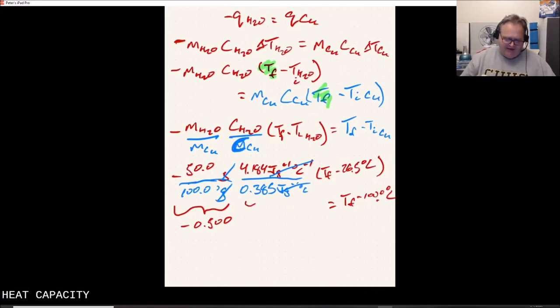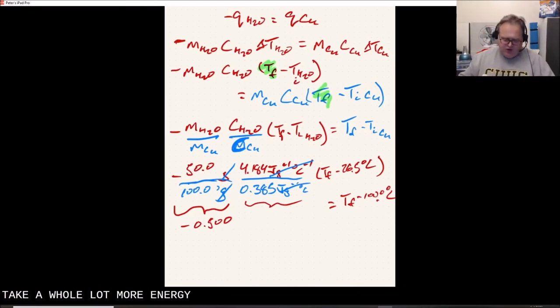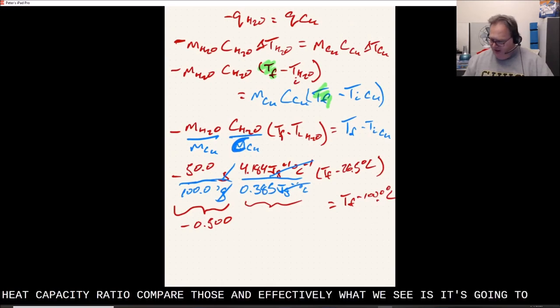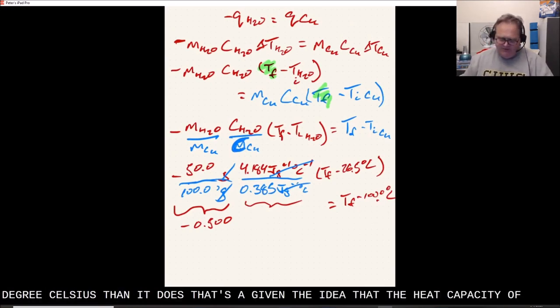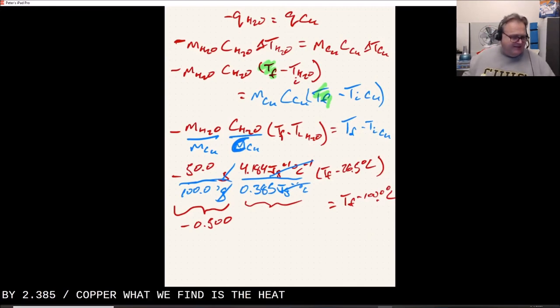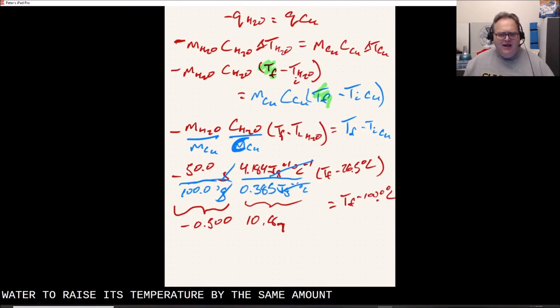We've got twice as much copper as water. We can now look at the heat capacity ratio, compare those, and effectively what we see is it's going to take a whole lot more energy to raise the temperature of one gram of water by one degree Celsius than it does for copper. The heat capacity of water is 10.87 times bigger.